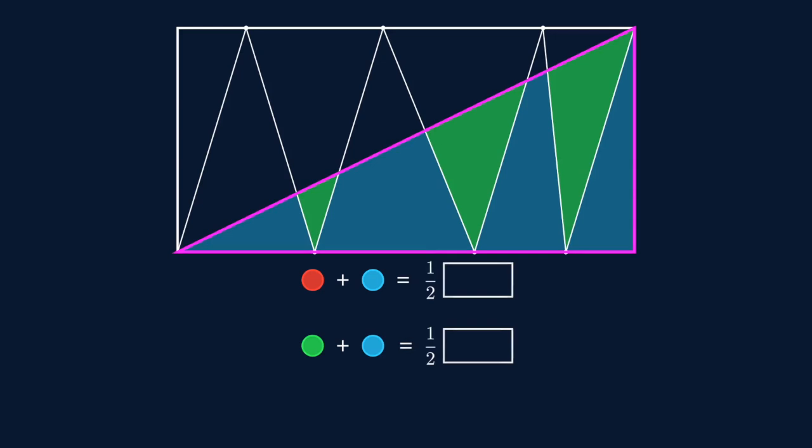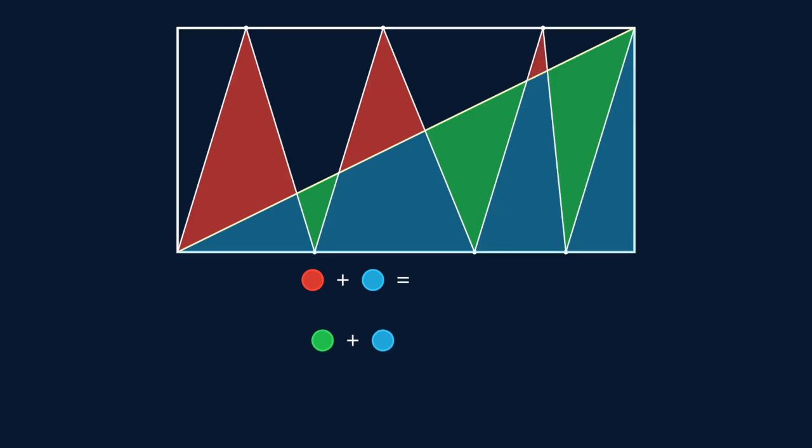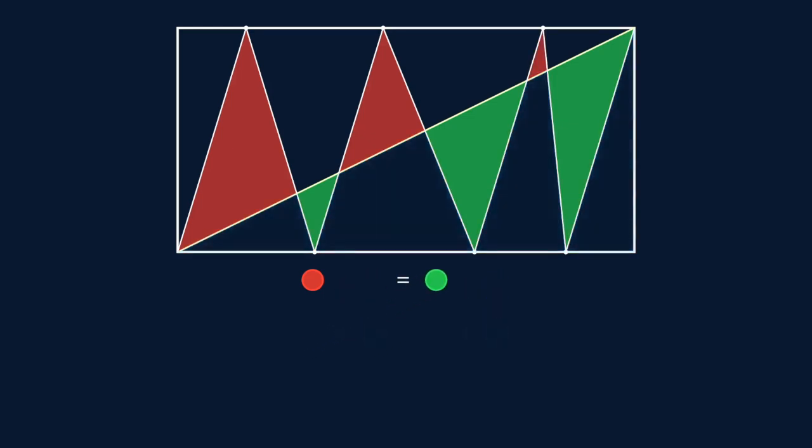The red and the blue regions sum to half of the rectangle's area. The green and the blue regions sum to half of the rectangle's area. We set them equal. We get red plus blue equals green plus blue. So red equals green.